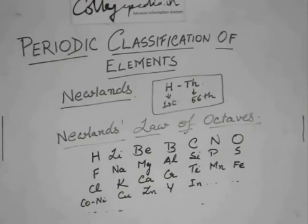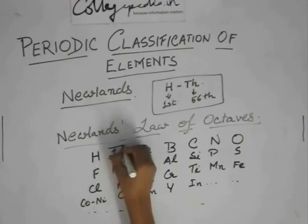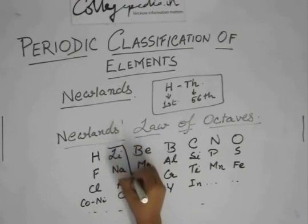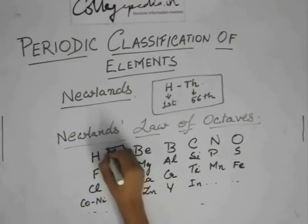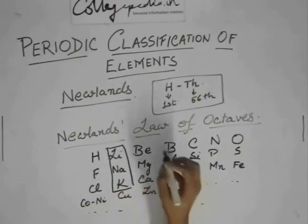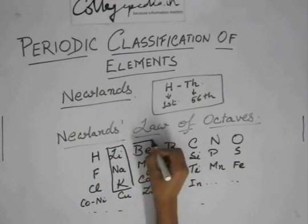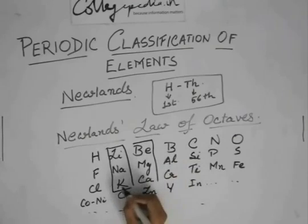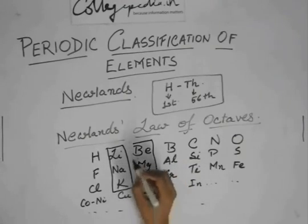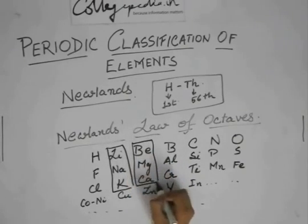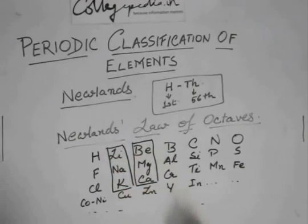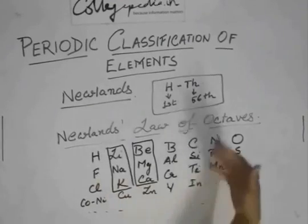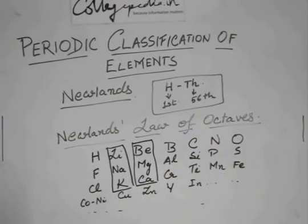Lithium, sodium, and potassium all shared similar properties. Similarly, beryllium, magnesium, and calcium showed similar properties. This was another way of classifying elements, and Newlands went up to thorium, which is the 56th element.